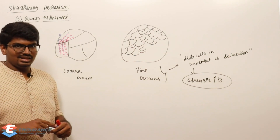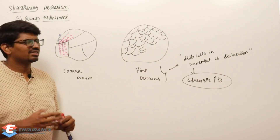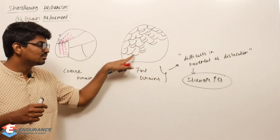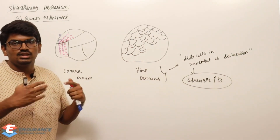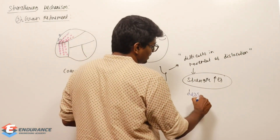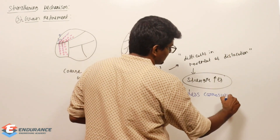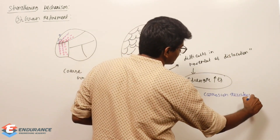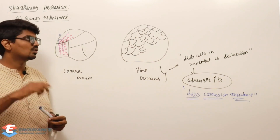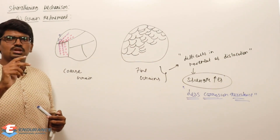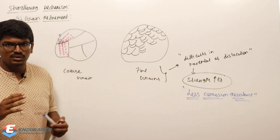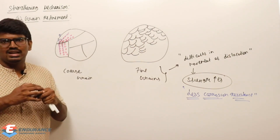Finer grains give more strength, but there is a trade-off: finer grains have larger bond lengths at the grain boundaries, making the material less corrosion resistant. Even so, finer grains have more strength because dislocations cannot pass the increased number of grain boundary obstacles. Therefore, finer grains generally have more strength.